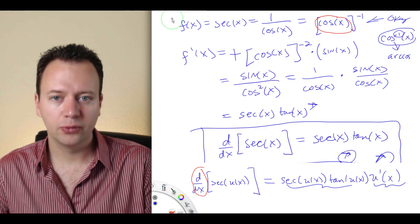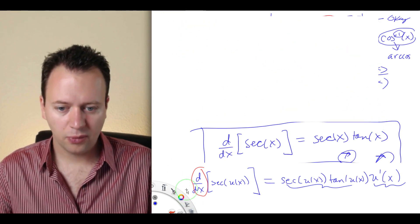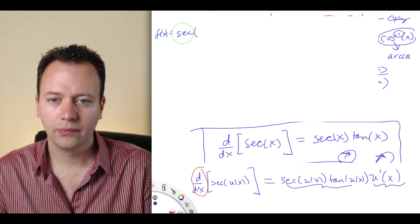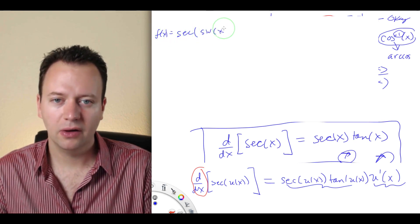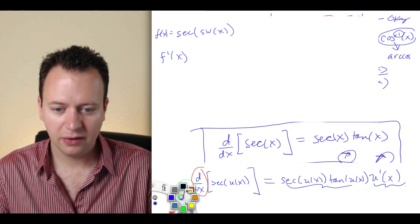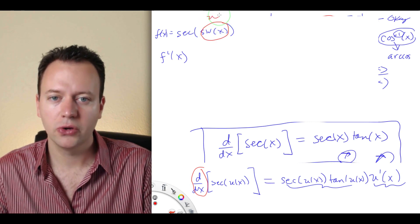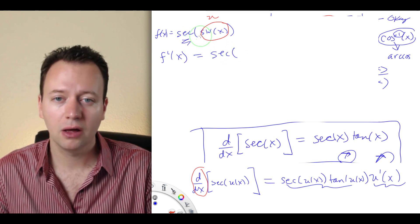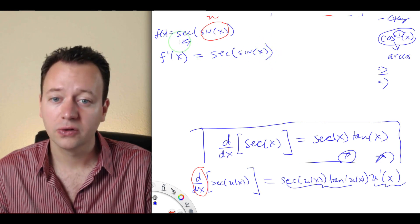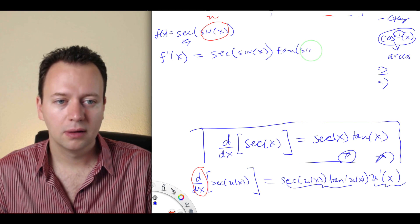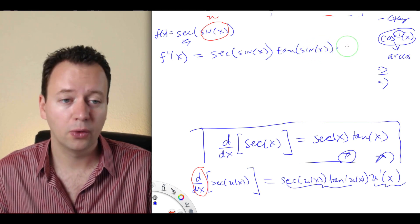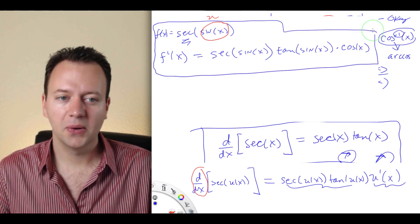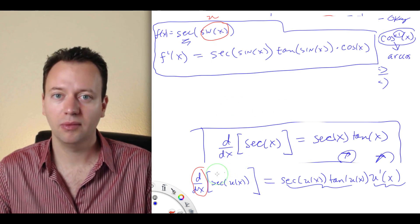As a brief example, let's consider d/dx of secant of sine of x. Here sine of x is the inside function. We take the derivative of the outer function secant, giving secant of sine of x times tangent of sine of x, then multiply by the derivative of the inside, which is cosine of x. So the derivative of secant of sine of x is secant(sin x) · tangent(sin x) · cos x.